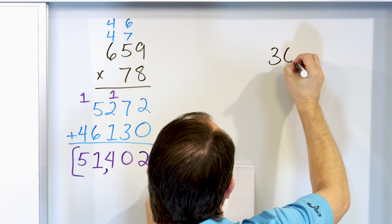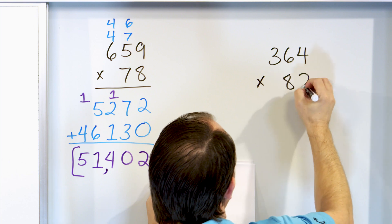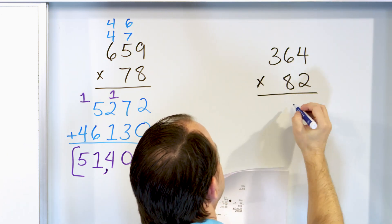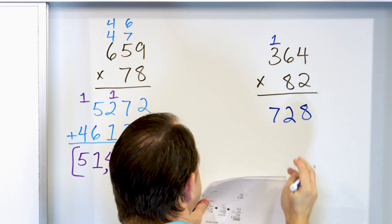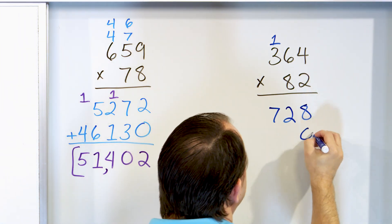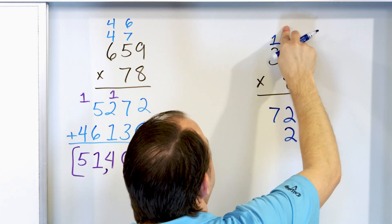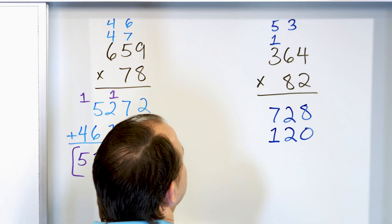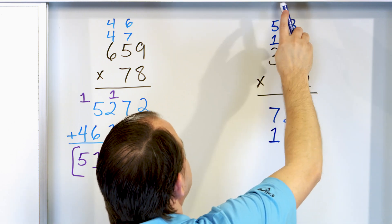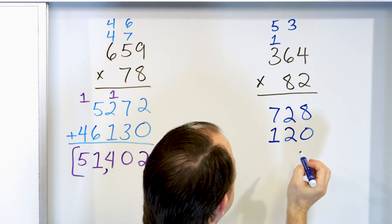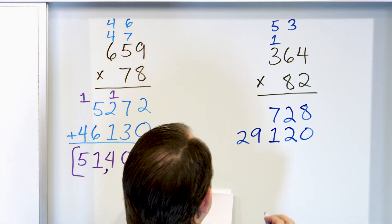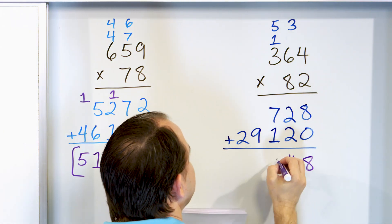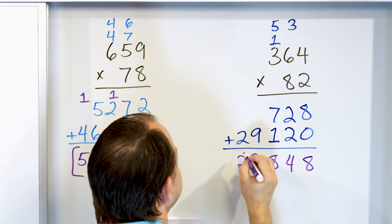Next problem — we'll speed up just a touch. 364 times 82. Multiply by two: two times four is eight, two times six is 12 — carry the one, two times three is six plus one is seven. So the first thing we get is 728. Now multiply by eight — drop a zero. Eight times four is 32 — carry three. Eight times six is 48, plus three is 51 — carry the five. Eight times three is 24, plus five is 29. Adding: eight plus zero is eight, two plus two is four, seven plus one is eight, then the nine and the two. The answer is 29,848.